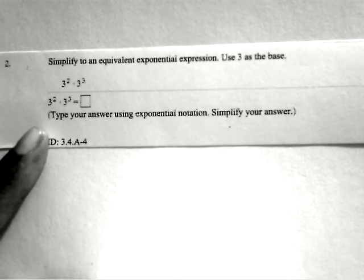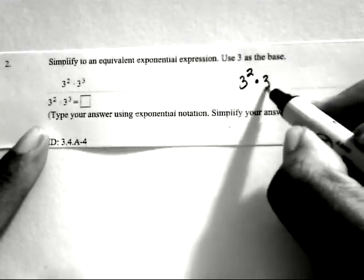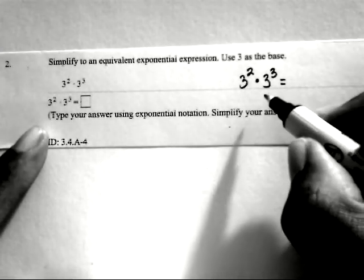Simplify to an equivalent exponential expression. Use 3 as the base. Here we've got 3 to the second times 3 to the third. And we're going to use exponential notation. In this case here, we're multiplying powers of the same base.